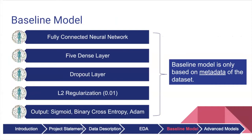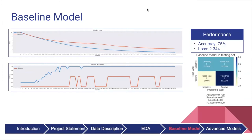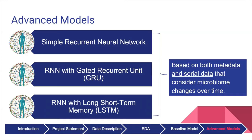For a baseline model, we made a fully connected neural network on the metadata with five dense layers, a dropout layer, and L2 regularization with a sigmoid output. Over 100 epochs, we achieved a test accuracy of 75%. I'll now turn it over to Terry to show our advanced modeling results.